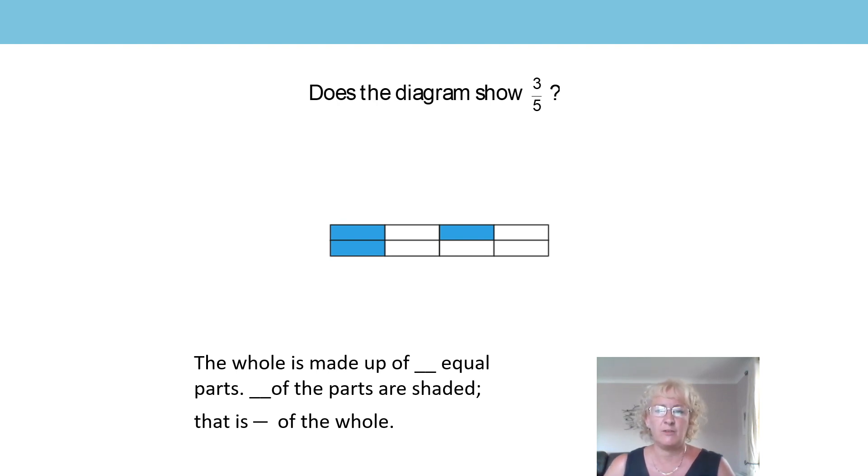I'm just wondering now if we can perhaps think about how we can change that diagram so that it does show three fifths. Can you think about what you might need to do? If we got rid of three parts, now we have got three equal parts that are shaded and there are five equal parts altogether. Well done if you spotted that, fantastic.